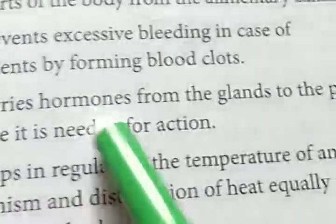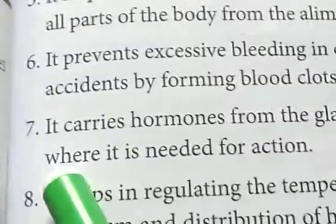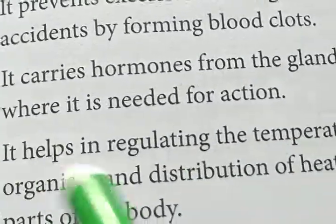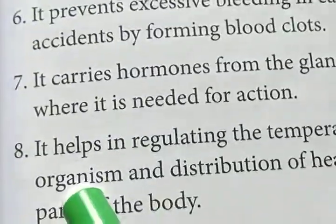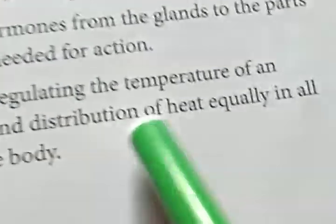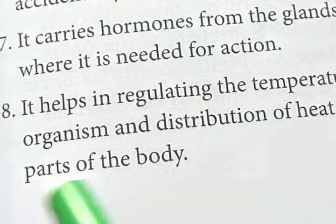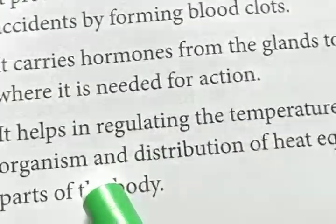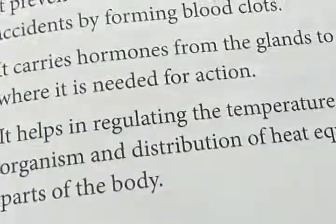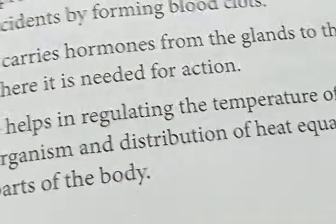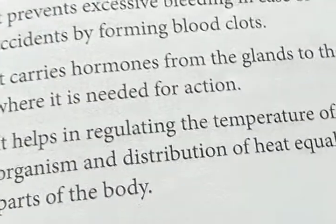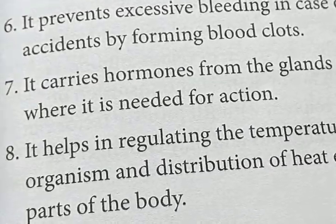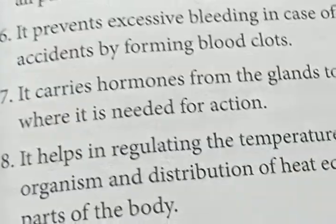It carries hormones from the glands to the parts where they are needed for action. It helps in regulating the temperature of an organism and the distribution of heat equally in the parts of the body. Blood actually helps to regulate our body temperature because it distributes all the energy produced in the cells, which is why our body temperature is under control.